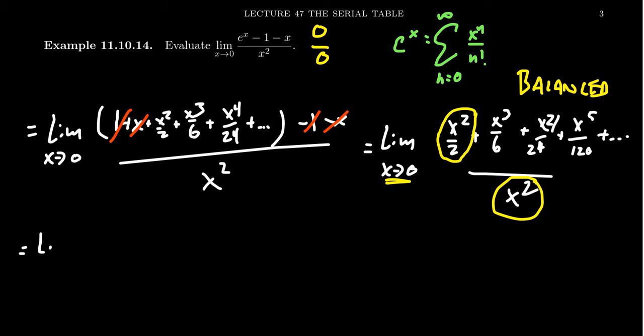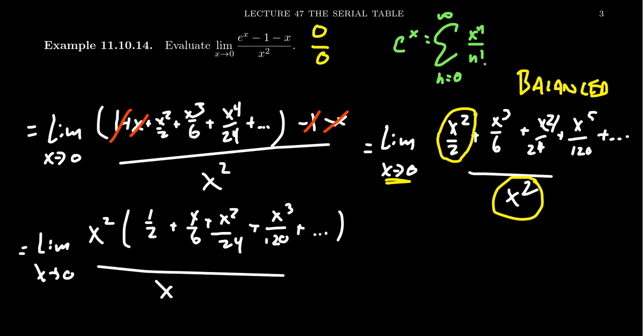And to help us compute this thing, we're going to factor out an x squared from the top. You factor out an x squared. That leaves behind 1 half plus x over 6 plus x squared over 24 plus x cubed over 120. We have an x squared on the bottom. This factor out x squared on top cancels with the one on the bottom.